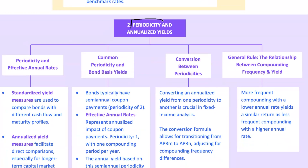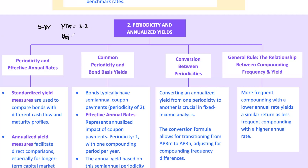First things first — what is periodicity? Think of it as the number of times a bond pays interest each year. Most bonds don't just pay interest annually; they can pay semi-annually, quarterly, or even monthly, and this affects the bond's yield. Take a five-year bond that pays semi-annual coupons with a stated YTM — yield to maturity — of 3.2%. Since it pays twice a year, the periodicity is 2. You divide that 3.2% by 2, giving you 1.6% per period. Simple, right?